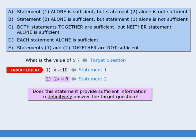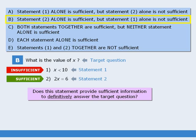What about statement 2, which tells us that 2x equals 6? Does this statement provide sufficient information to answer the target question? The answer is yes. If we know that 2x equals 6, then x must equal 3, which means we can definitely determine the value of x. Since statement 2 does provide sufficient information, we will say that this statement is sufficient. So statement 1 is not sufficient, but statement 2 is — this means the answer to our question is B.